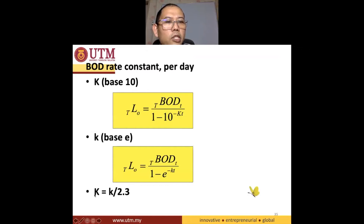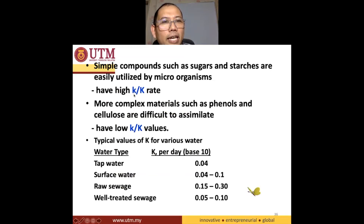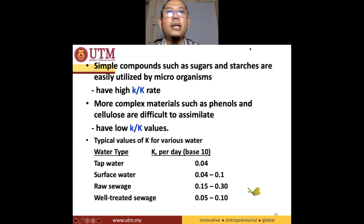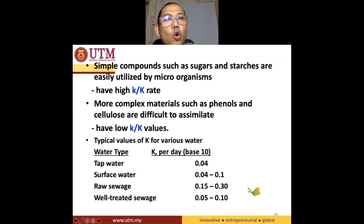Big K is equal to small K divided by 2.3. There's something else you need to know: what do we mean to have a high K — it's either small K or big K. If you have high K, that means your organic compound is easily being biodegraded. But if you have low K, that means your organic compound is difficult to be biodegraded.